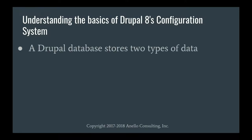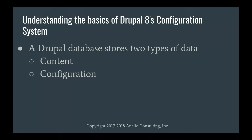Drupal's database stores two types of data. There's your content — you go to node add, type type type, hit save, and all that stuff goes in the database. The other half is configuration — everything else you do through the Drupal UI that's not content. You create a view and save it, the structure of that view gets stored as configuration. You create a content type with 13 fields — the widgets, formatters, and settings you selected for each field — that's all configuration, stored in the database.